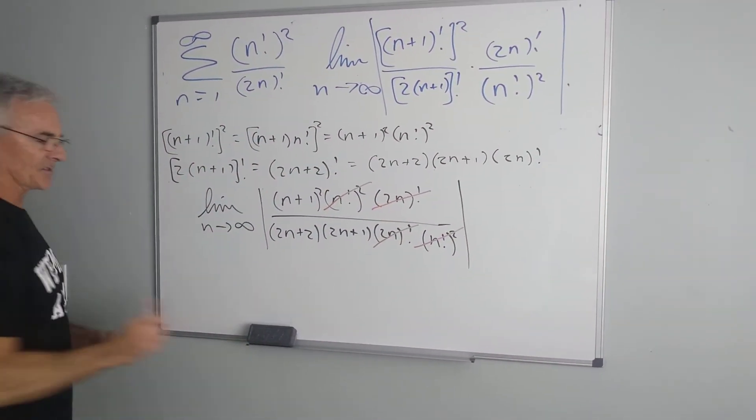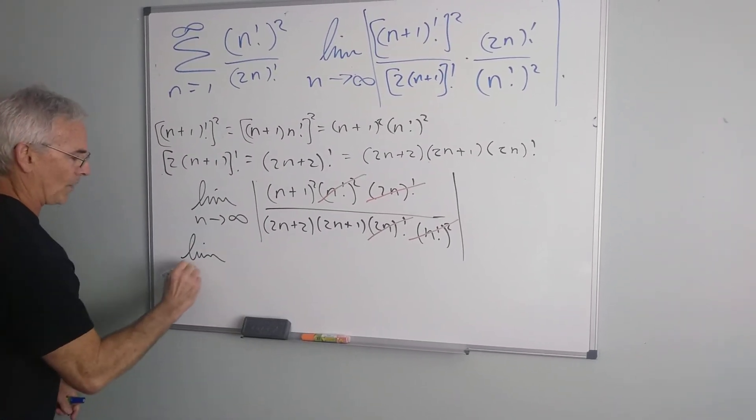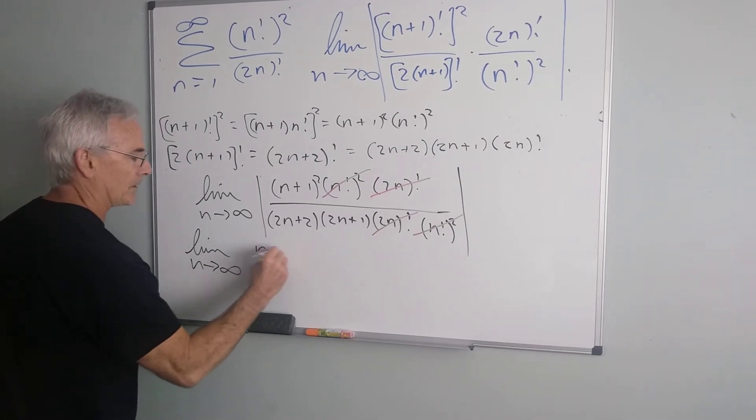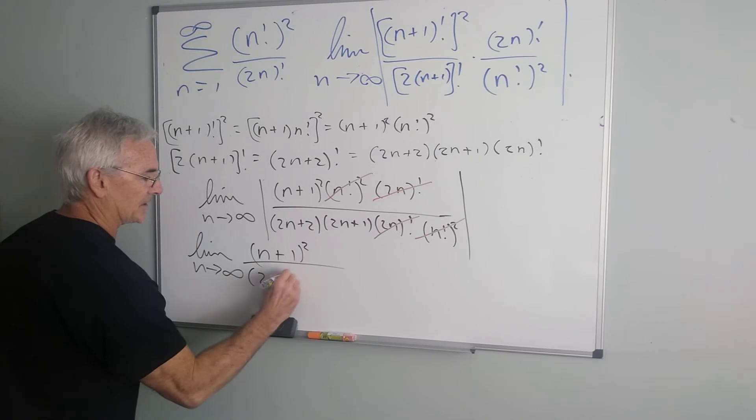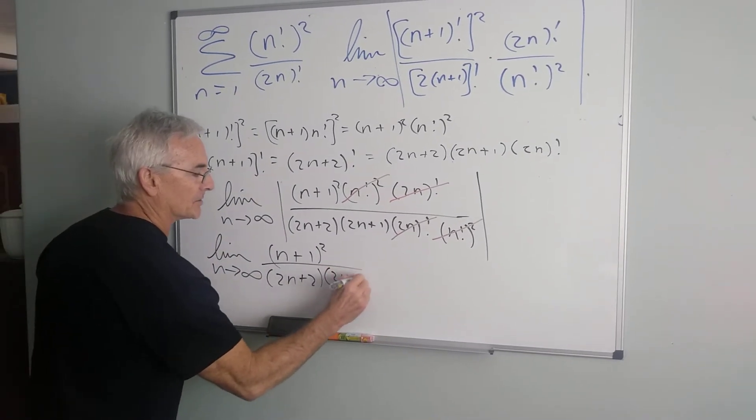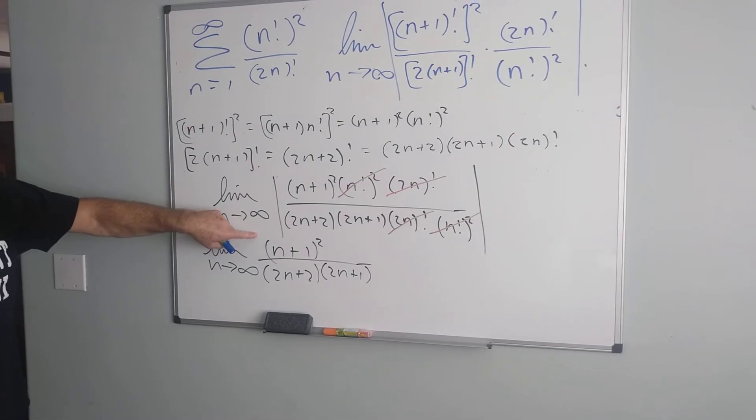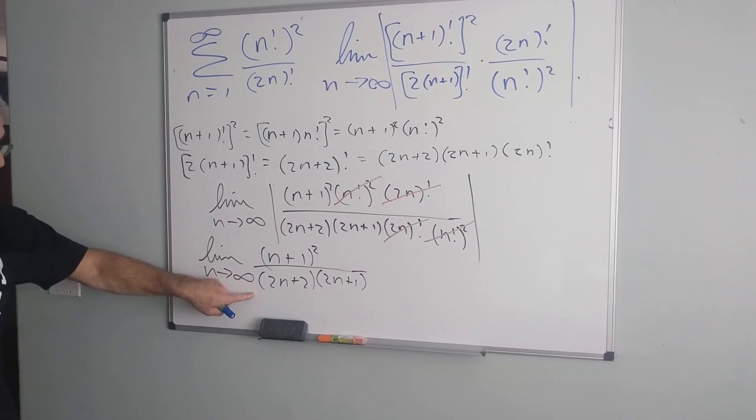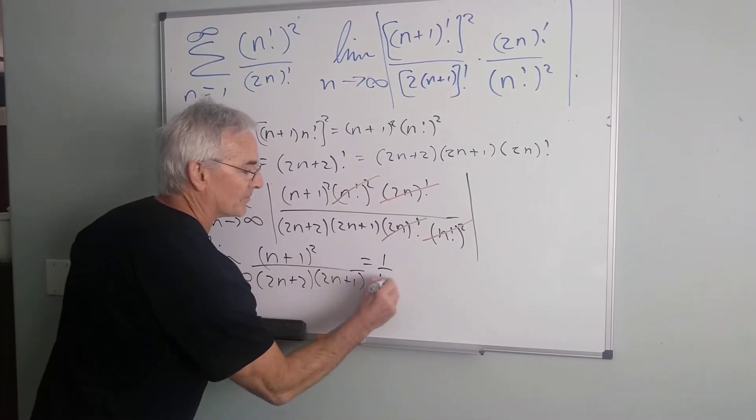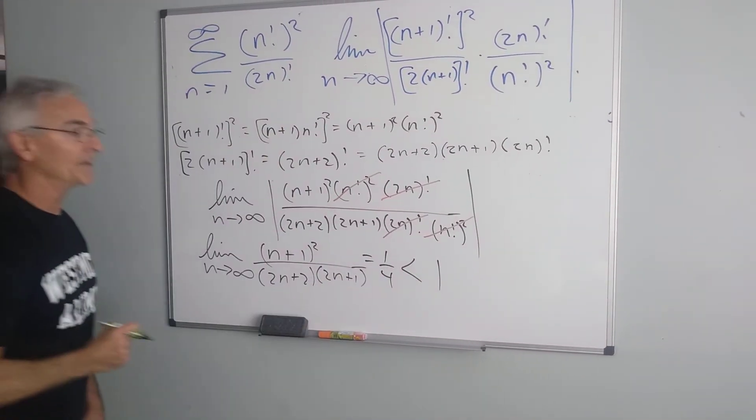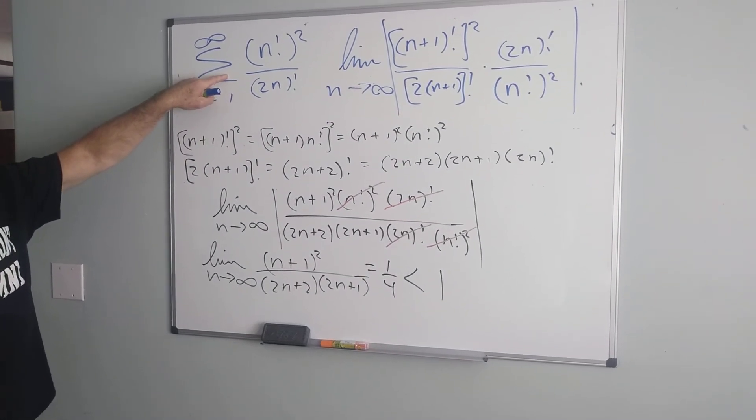So, now we notice that all of the factorial terms are going to cancel very nicely. And what that leaves us with is a limit of a rational function, which is our favorite one to work with. Since all of the terms are going to be positive, I'll go ahead and drop the absolute value. Right now, we have a second degree polynomial over a second degree polynomial, so we can just take the ratio of the lead coefficients. We'll see that's equal to 1 fourth, which is less than 1. Therefore, our original series converges by the ratio test.